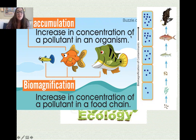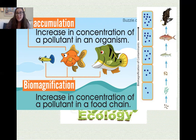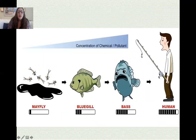Bioaccumulation refers to the increase in concentration of a pollutant in an individual organism over its lifetime — for example, a person exposed to small amounts of DDT as a child and then more as an adult working on a farm. Biomagnification, by contrast, is the increase in concentration of a pollutant moving up a food chain — from plankton all the way up to the bald eagle. The concentration of contaminants gets higher as we go up because each organism below is directly exposed to the toxin, and all that toxin is preserved and passed upward.